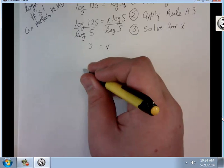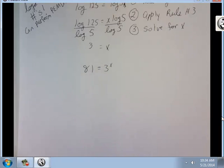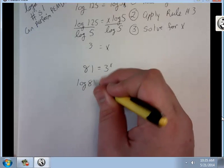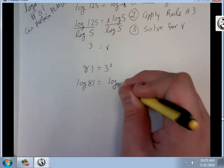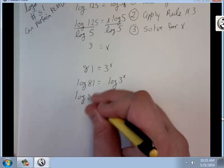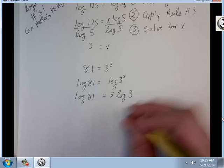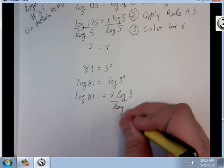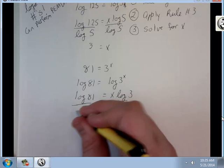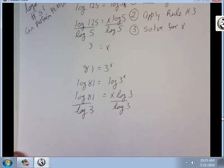Alright, we're going to do another example. Let's say 81 equals 3 to the x. Process stays the same. Log of both sides. Apply rule 3. Solve.